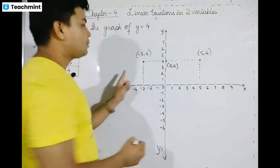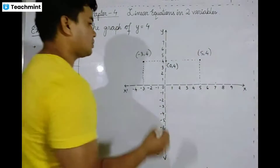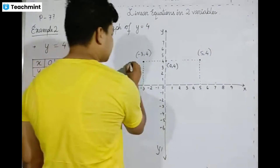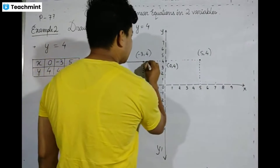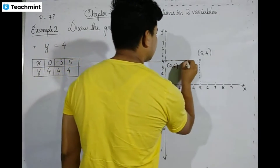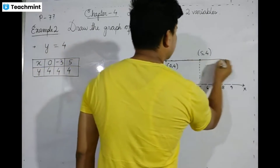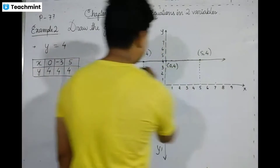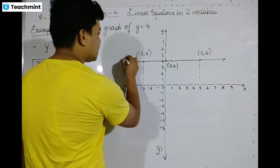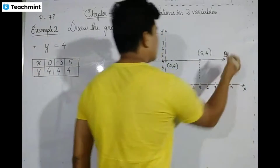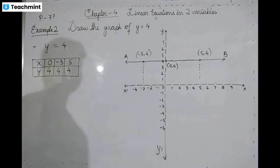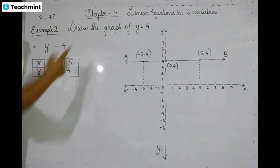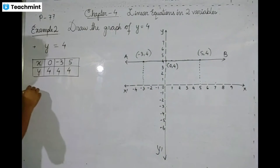And x minus 4 is equal to 3, so x equals 1. Then x minus 4 is equal to 4, giving x equals 2, and x minus 4 is equal to 5.